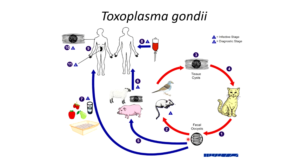Humans can become infected when they ingest sporulated oocysts through eating undercooked meat, through a dirty cat litter box that hasn't been changed in several days, or through contaminated food or water. A person can also transmit the disease to another person through a blood transfusion, or a pregnant mother can transmit the parasite to the developing fetus. The parasite can then form tissue cysts within the muscles of the human, or eventually spread to the brain and start causing neurological disorders.